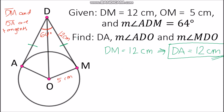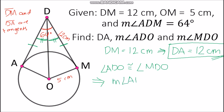To find angle ADO and angle MDO, we use the measurement of angle ADM. From the tangent segments theorem, connecting the external point to the center creates two congruent angles. Since angle ADO is congruent with angle MDO, we divide angle ADM (64°) by 2, giving us 32 degrees for each angle.